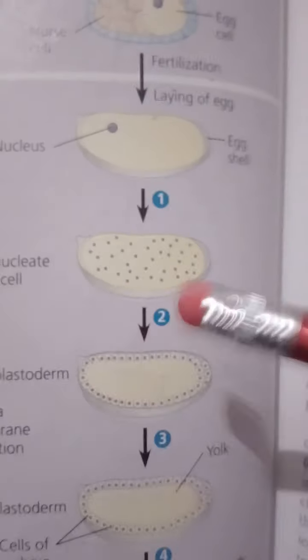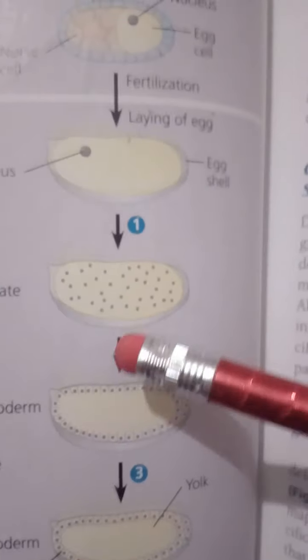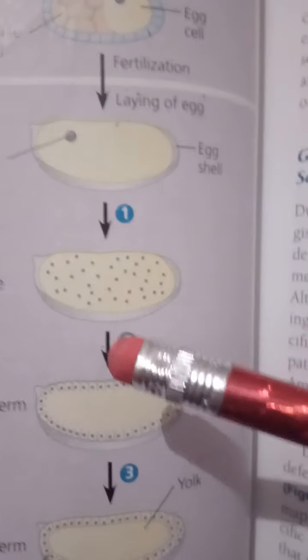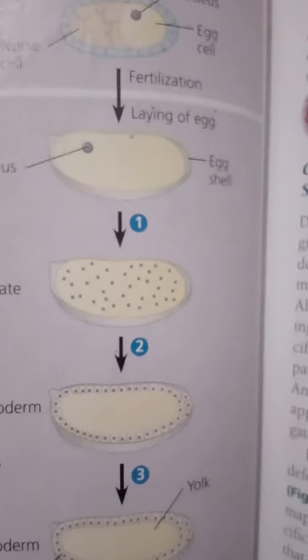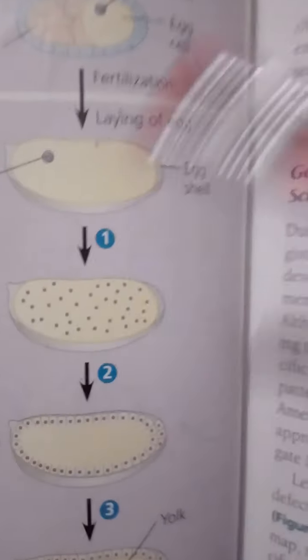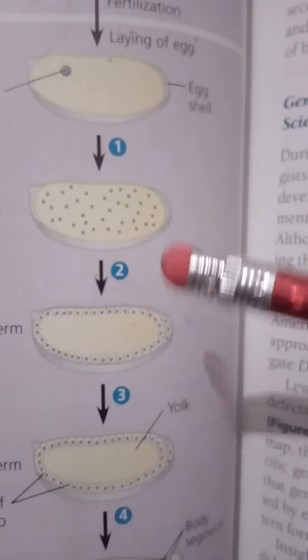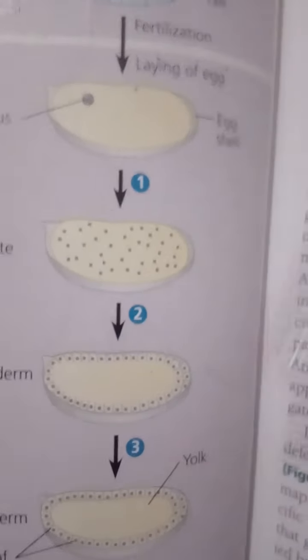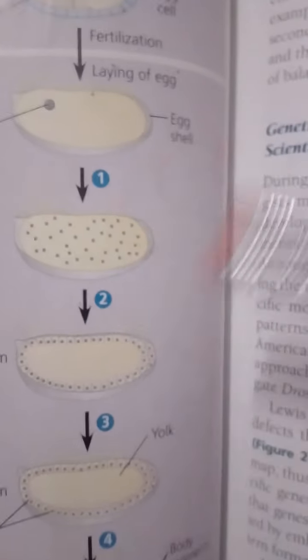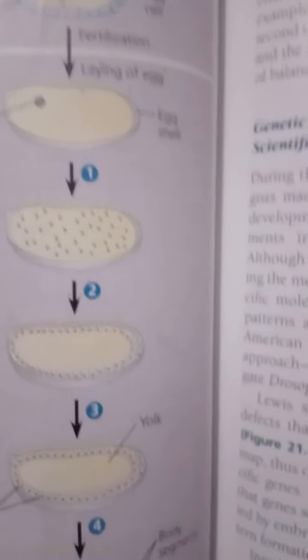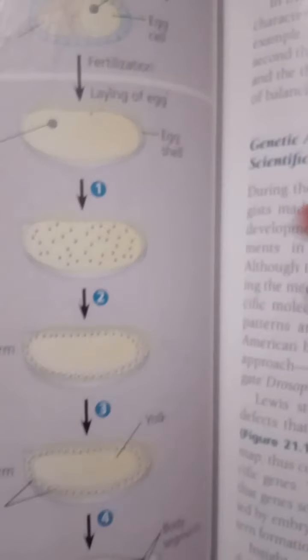At stage two, at the tenth nuclear division, the nuclei begin to migrate to the periphery of the embryo, forming an early blastula-like stage called the blastoderm. At stage three, at division 13, plasma membranes finally partition the 6,000 or so nuclei into separate cells of the late blastoderm. Although not yet apparent under the microscope, the basic body plan — including body axes and segment boundaries — has already been determined by this time. A centrally placed yolk nourishes the embryo, and the egg shell continues to protect it.